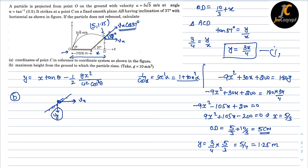To find vx: at any time, the horizontal velocity remains equal to the initial horizontal velocity, so vx = u·cos α. With u = 5√5 and cos α = 2/√5 (since tan α = 1/2), the √5 cancels out, giving vx = 10 m/s.